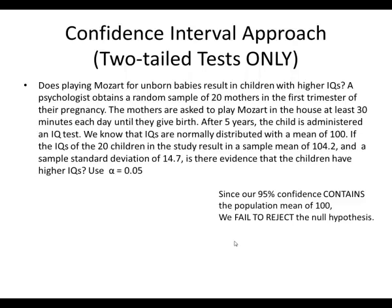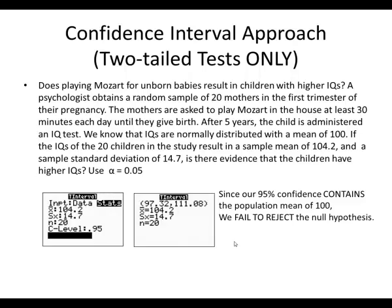For the confidence interval approach — which only applies to two-tailed tests — our confidence interval contains our mean of 100. We use T interval with stats and enter the information from our sample. We pick a confidence level of 0.95 because alpha is 0.05, meaning 95% of our data falls within the boundaries. Since our confidence interval contains 100, the population mean, we fail to reject the null hypothesis. We do not have enough evidence to say that the IQ scores are different.